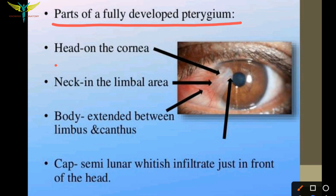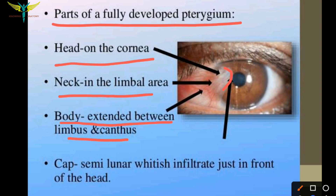The parts of the fully developed pterygium: there is a head which encroaches upon the cornea; a neck in the limbal area, just below the head; a body that extends between the limbus and the canthus; and a cap, which is a semilunar whitish infiltrate just in front of the head. So these are all the parts of the pterygium.